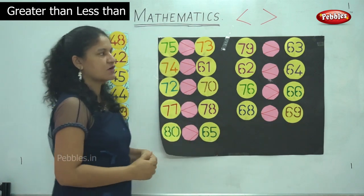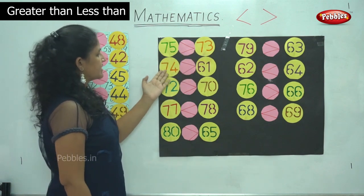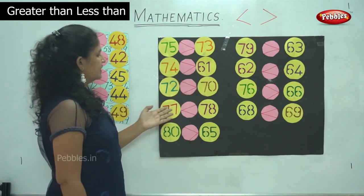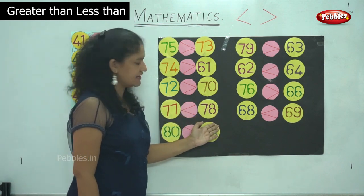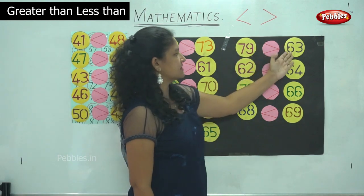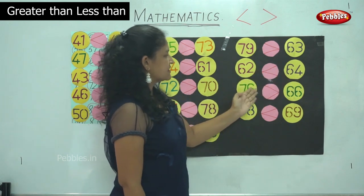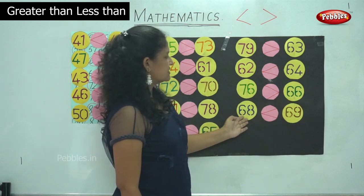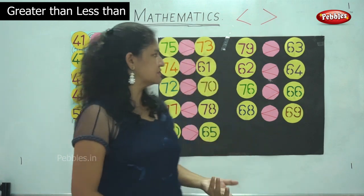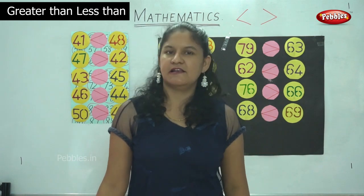I hope you have understood this concept. To review: 75 is greater than 73, 74 is greater than 61, 72 is greater than 70, 77 is lesser than 78, 80 is greater than 65, 79 is greater than 63, 62 is lesser than 64, 76 is greater than 66, and 68 is lesser than 69. The mouth of the alligator always opens towards the bigger number. I hope you have understood the concept of greater and lesser than.